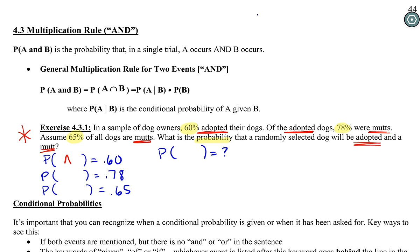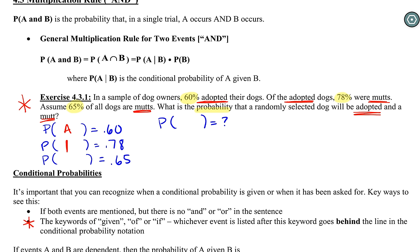Coming back now. The first probability is one of our marginal probabilities. The next sentence has our 78% — it has 'adopted' and 'mutt.' Notice there is no 'and' or 'or' between these; that's the heads-up that this is a conditional probability. The keywords for conditionals are 'given,' 'of,' or 'if.' We can see the keyword 'of' — telling us the dog was adopted, so adopted goes behind the line and mutt goes in front. The last probability, 65% mutts, is another marginal. And the probability we're looking for is adopted AND mutt.